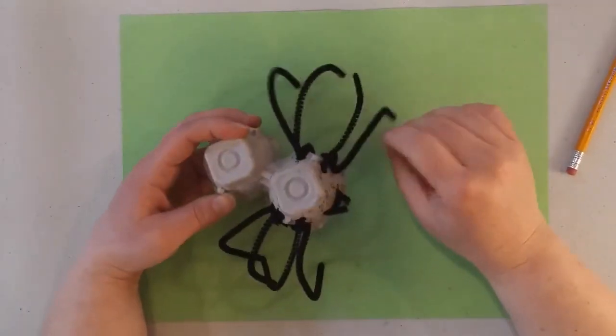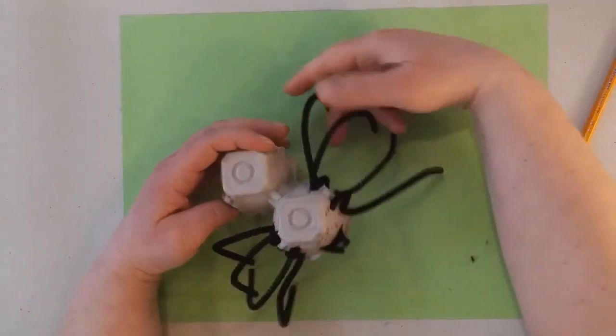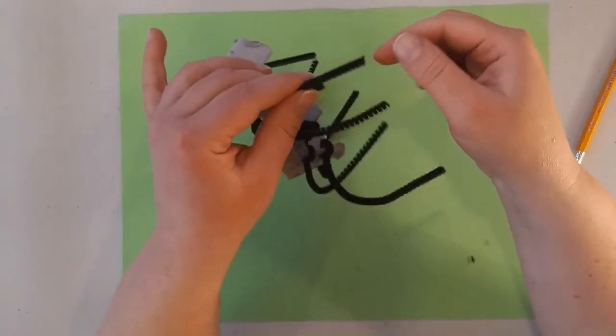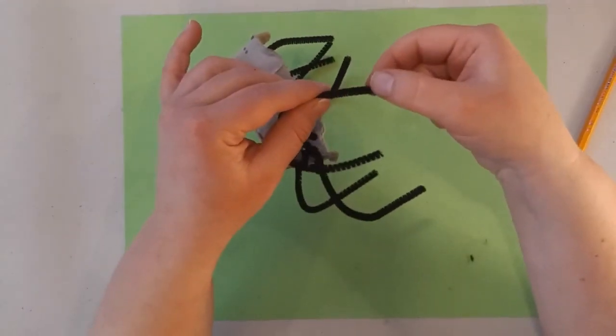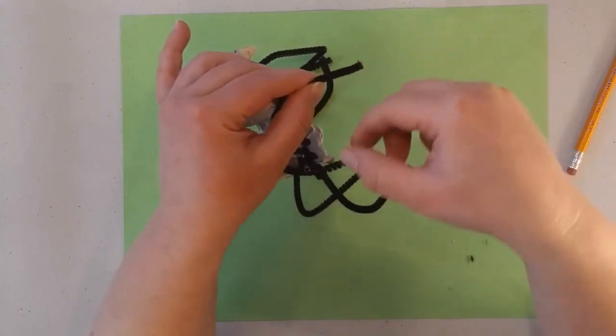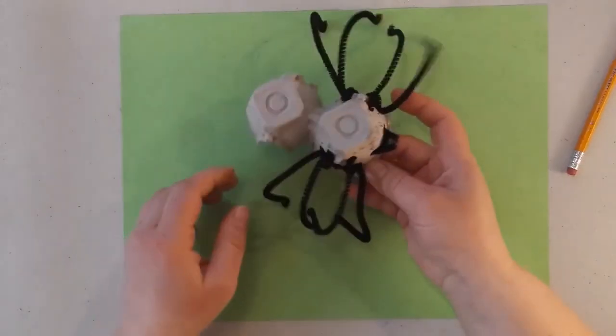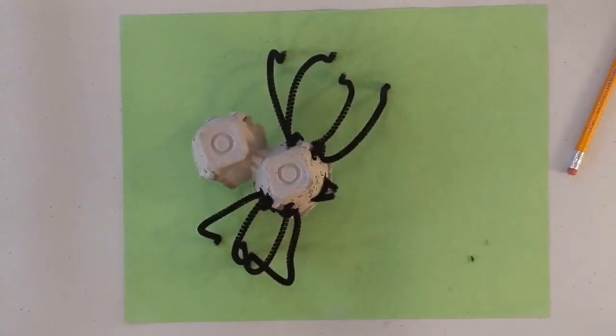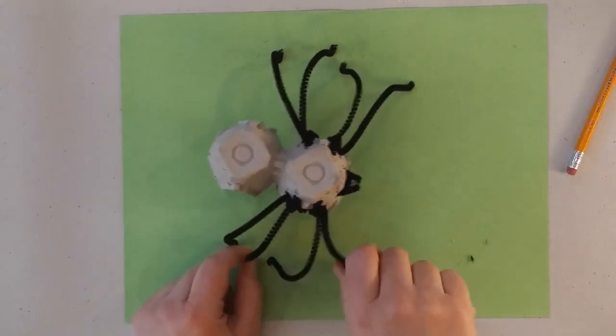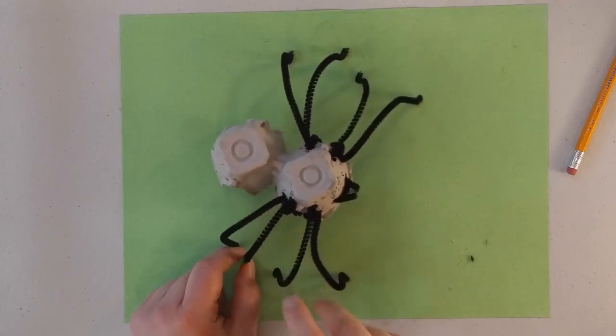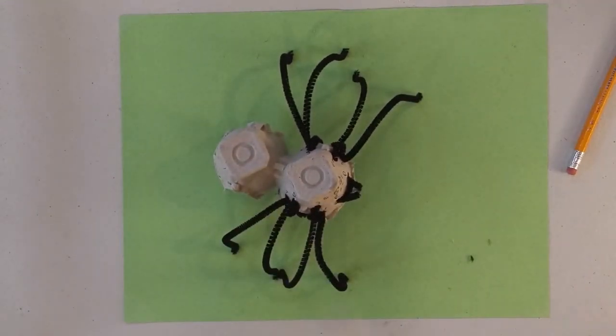Now my spider is having trouble standing. So sometimes what I will do if your spider is having trouble standing is bend the very bottom of each leg out a little to make a foot. So I am going to bend the feet on my spider and then they stand a little bit better. Then you can go on and decorate it however you want. You can add whatever you would like to your spider. And then when you're finished, send me a picture. I would love to see your work. Have a great day, my friends. Bye.